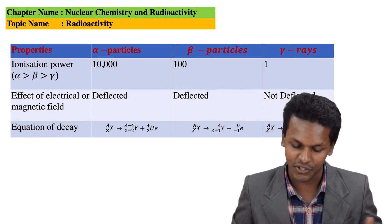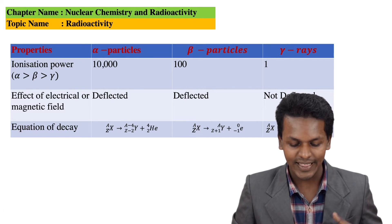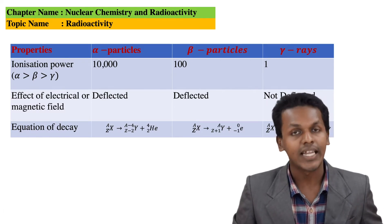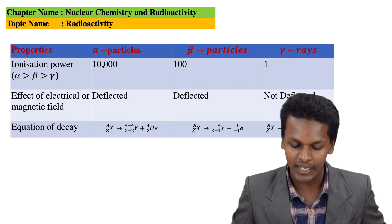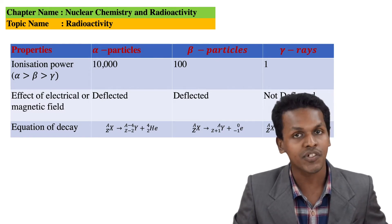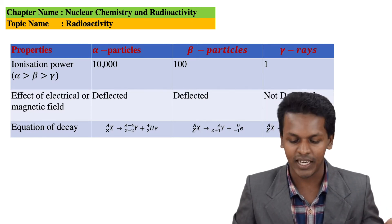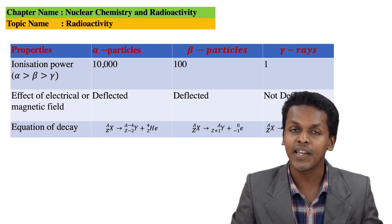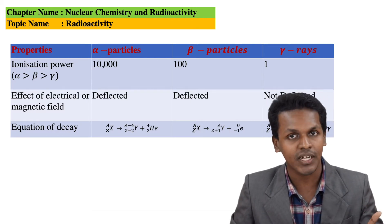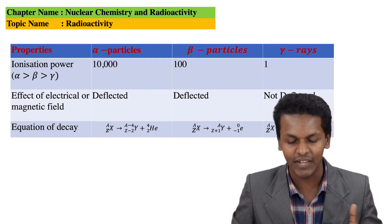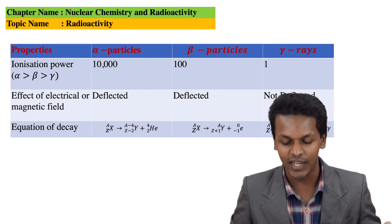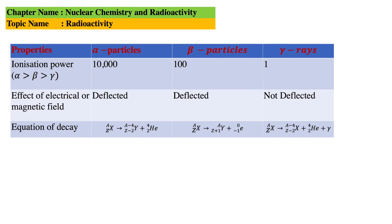Regarding ionization power, alpha has the highest ionization power compared to beta, and beta has more ionization power than gamma radiation. For electric or magnetic field deflection: alpha particles have a positive charge so they are deflected by electric and magnetic fields. Beta particles have a negative charge and are also deflected. Gamma radiation is neutral, so it will not be deflected by any electric or magnetic field.